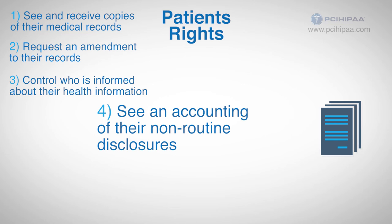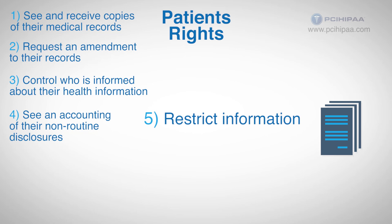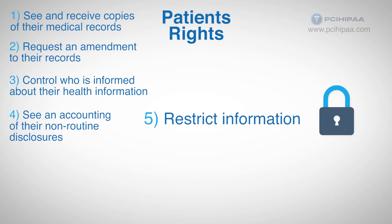Patients also have the right to restrict information. For example, they can restrict family members from knowing they have a terminal illness. They can also revoke the restriction if they decide to at a later date. It is the patient's right under HIPAA to control who receives and knows about their medical condition.